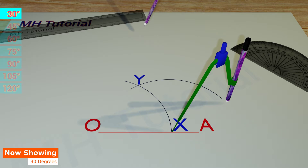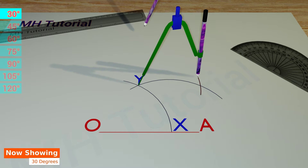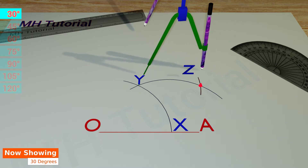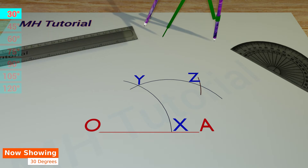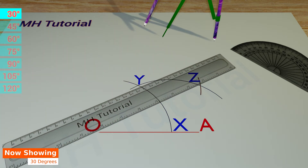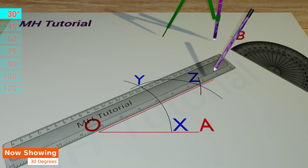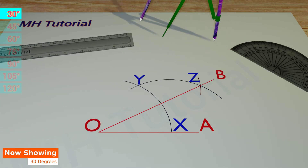After that, put the tip of the compass at point Y and draw an arc of the same radius to get an intersection against the second arc. This point of intersection is point Z. Now, align the ruler about the point O and the point Z, and draw a line segment between them. This line segment is named OB. Thus, the angle AOB is a 30 degree angle.